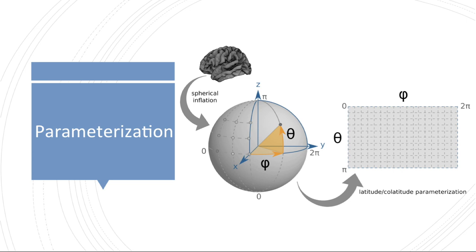So potentially a spherical signal can be mapped into the image space given an effective parameterization approach, such as for example the mapping of the globe to a world map. However, a perfect — meaning isometric — mapping between plane and sphere does not exist. Here we reduce the problem from the sphere, basically the inflated white matter surface, to a flat 2D grid via a latitude co-latitude parameterization.